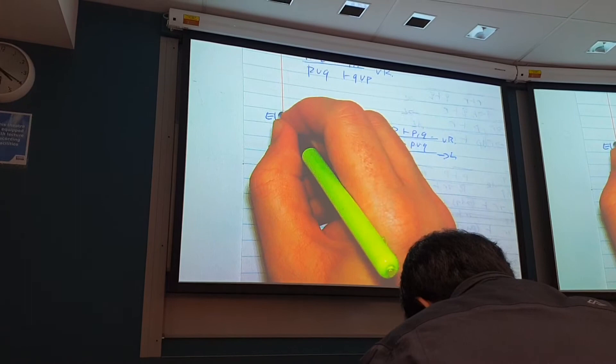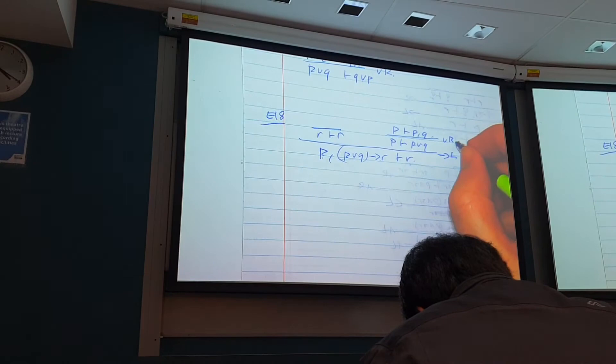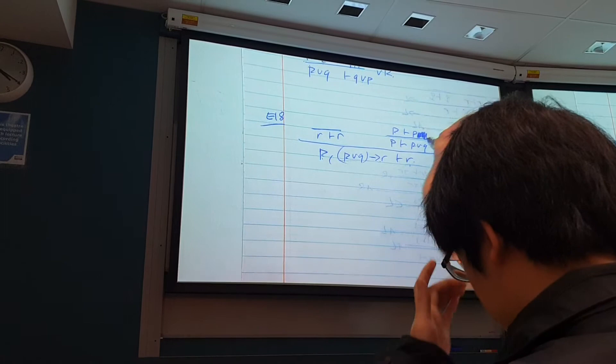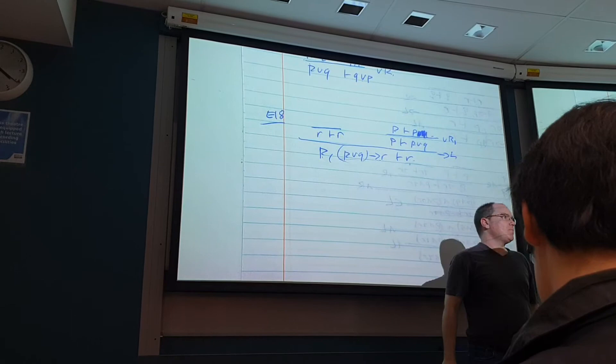So instead, you will use disjunction rule one. We decide to keep one of the disjuncts. So that says if from some stuff you can prove P, then from some stuff you can prove P or Q. So that's just disjunction introduction.